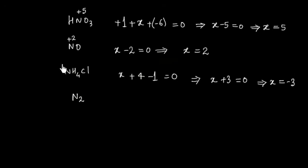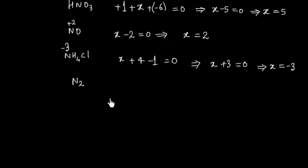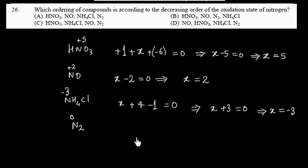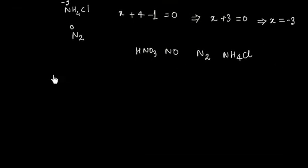So in this case nitrogen has oxidation number of minus three. Now in compound or in element in this case, nitrogen oxidation number is zero and this is coming from the definition of oxidation number. So you see we have to find order of decreasing order so the highest is HNO3 and then we have plus two that is NO and then I should have N2 and then I should have NH4Cl. So let us look the option B. I have HNO3 then NO then N2 and then NH4Cl so option B is the correct in this case.